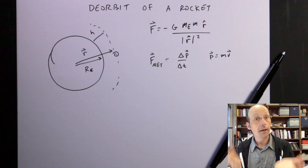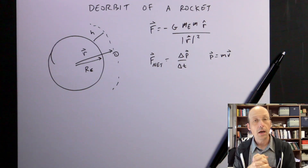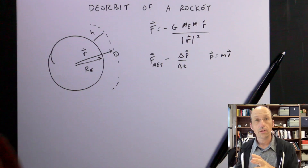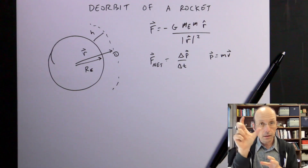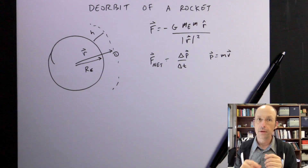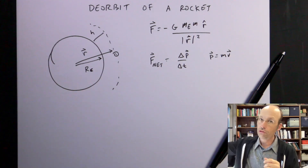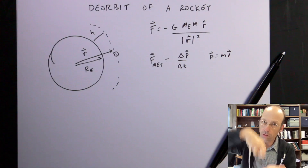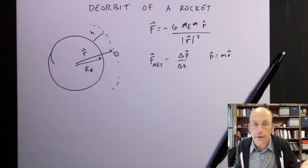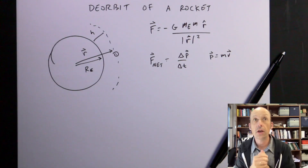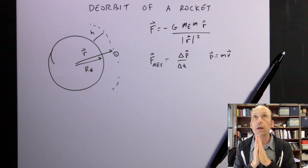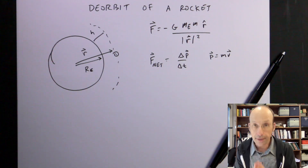There is this rocket orbiting the Earth, and it's going to crash down on Earth. The question is, where is it going to land? No one knows for sure, and it's a really difficult situation to predict.